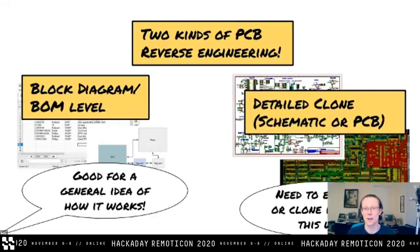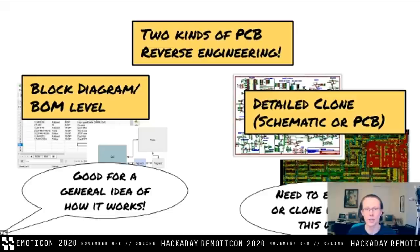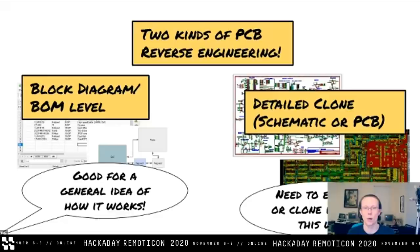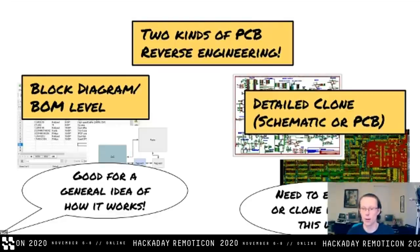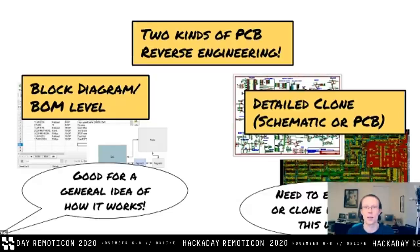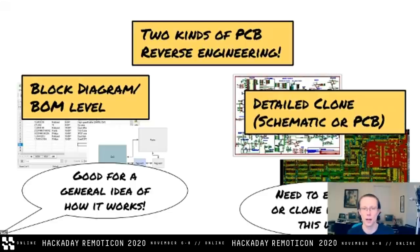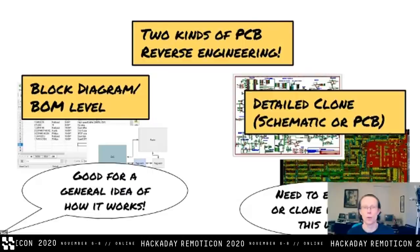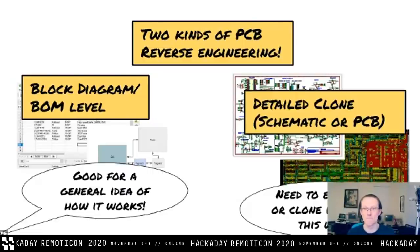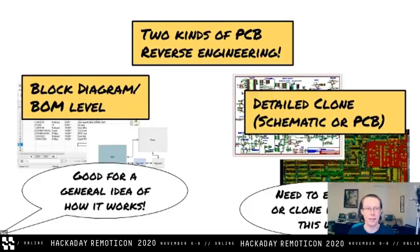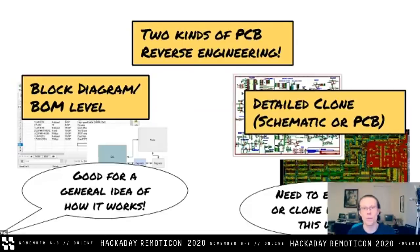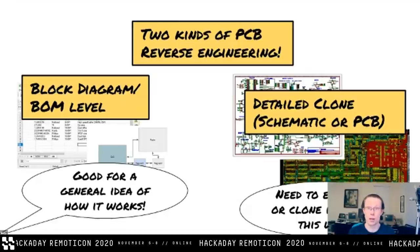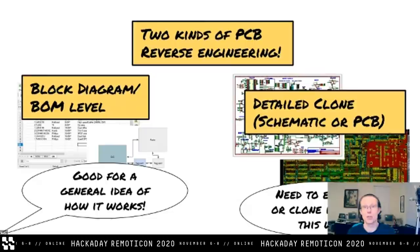I want to talk about the two basic kinds of PCB reverse engineering. The first kind is what I call a block diagram or bill of materials level. When you pay a professional company to reverse engineer a piece of hardware, typically this is what they'll give you — a report with images and a parts list, usually fairly detailed, although jellybean parts are often left out. The second kind is a detailed clone, where you back out the entire schematic and potentially even the PCB layout. That's what I did with the Snark Barker, starting from the Sound Blaster sound card.